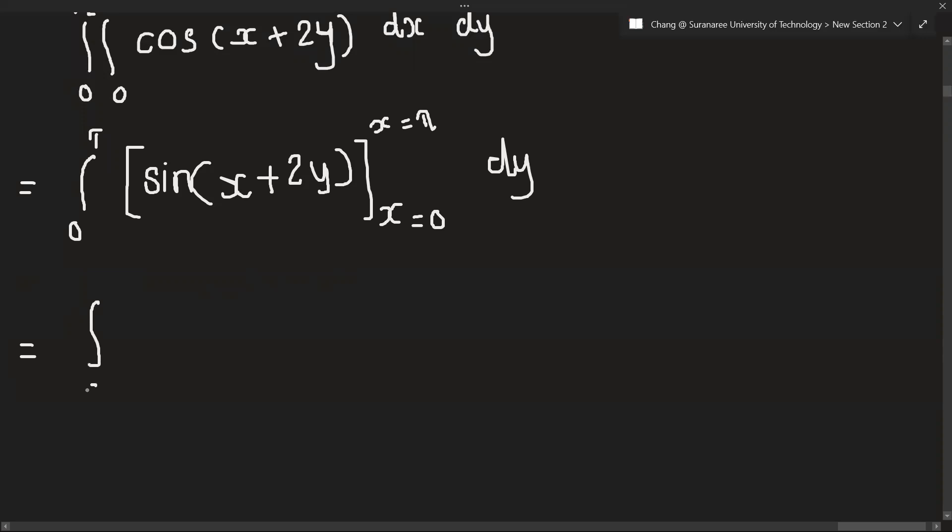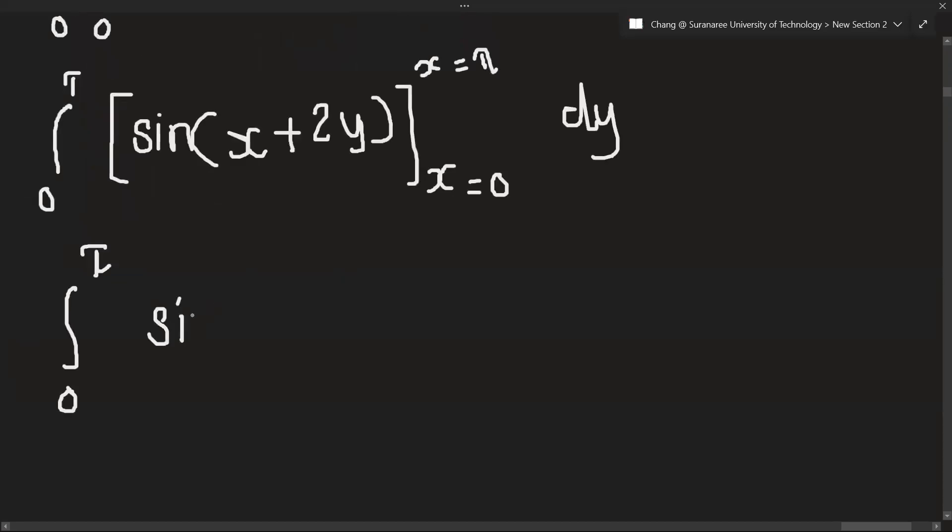Okay, so let's insert the value of x. So sin pi plus 2y minus sin, when we put the x as 0, it will be just 2y.